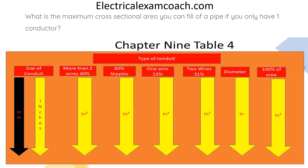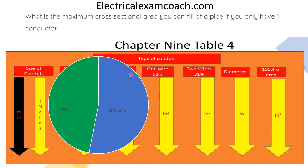We find this in Chapter 9, Table 4. We always check the type of pipe, but in this case it doesn't matter because the fill percentages are the same across all these tables. On the left-hand side is our conduit size. If you have more than two wires, the fill is 40%; nipples or other 60% conditions apply at 60%; and if you're only doing one wire — such as a grounding electrode conductor — you're only allowed to fill that pipe 53%. Visually, imagine looking directly at the end of a pipe: you're allowed to fill 53% of that cross-sectional area.